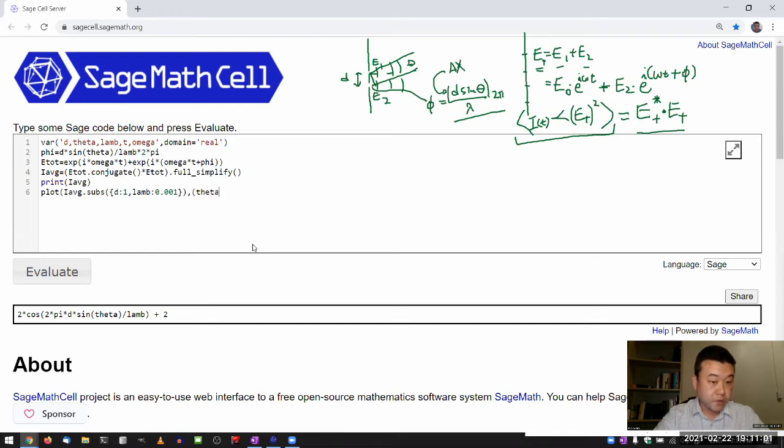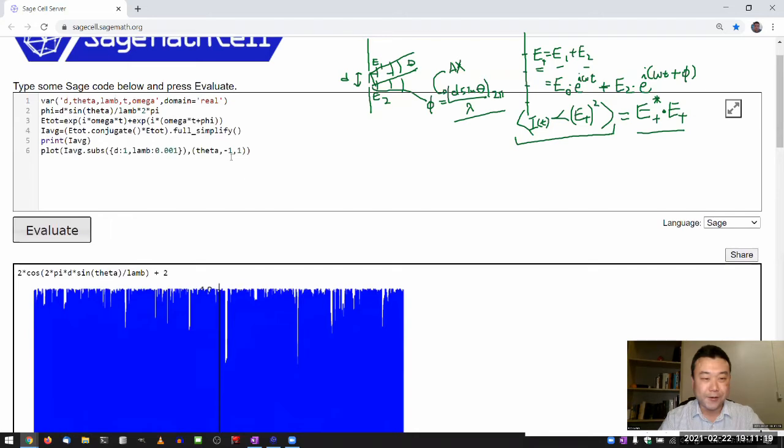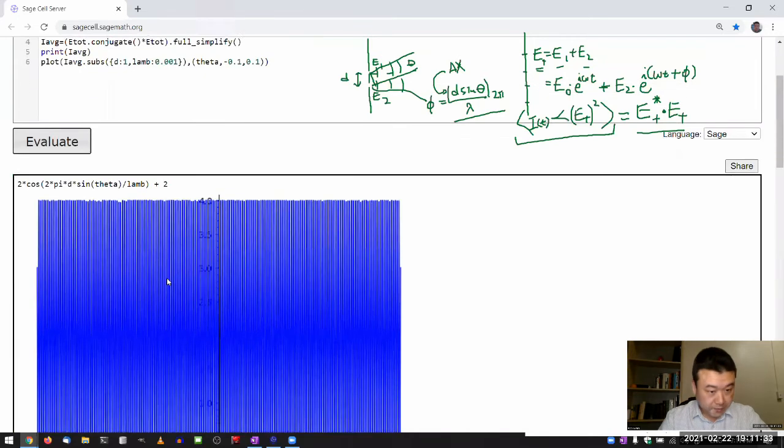And let me plot this from theta. So this is plot as a function of theta. And looking at this, I think once the theta is plugged in, then everything will be numerical. I don't know, from minus one to one. Oh, that's not what I wanted. I think I need to plot a smaller range. So maybe 0.1 radian to 0.1 radian.